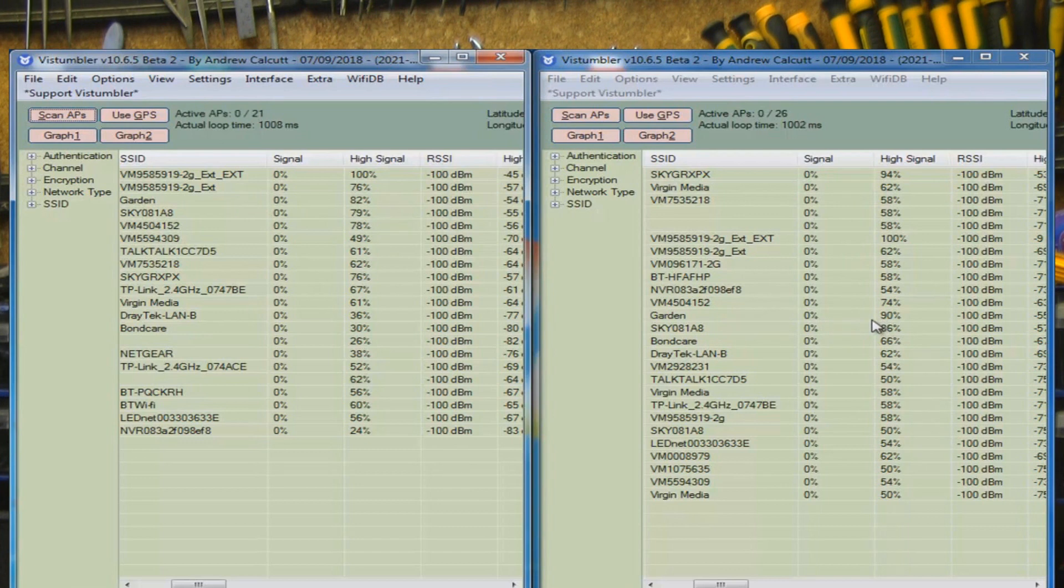So let's have a look at a few more. This Sky one here, this is Sky A8, and that's 79 percent on the ungrounded one and 86 percent on the grounded one. So again, yeah, it's a little bit more gain on the grounded reflector.